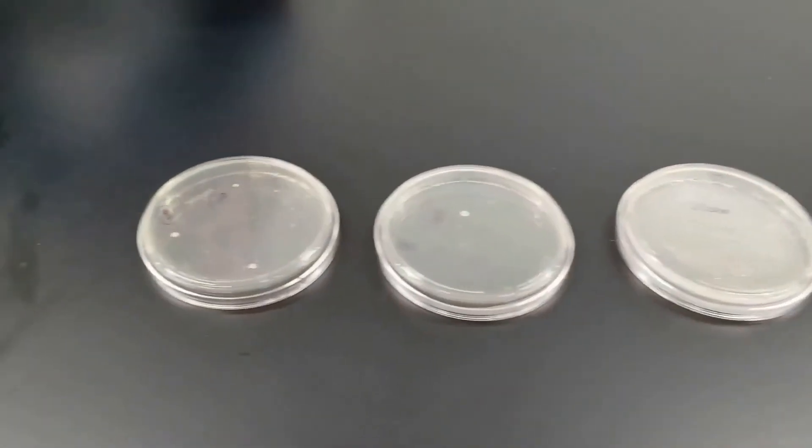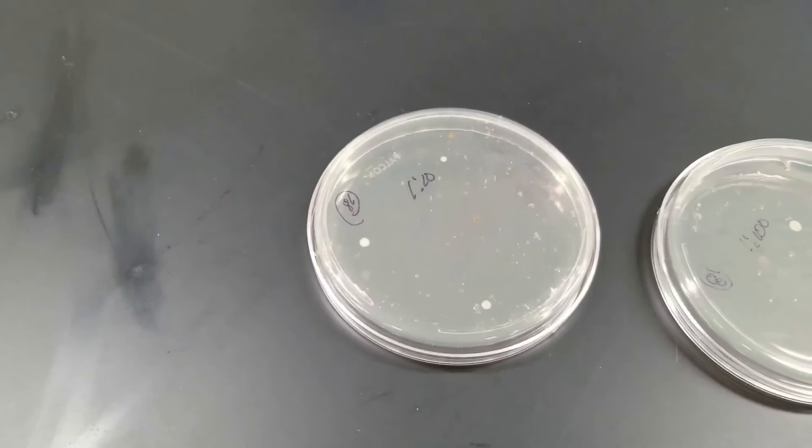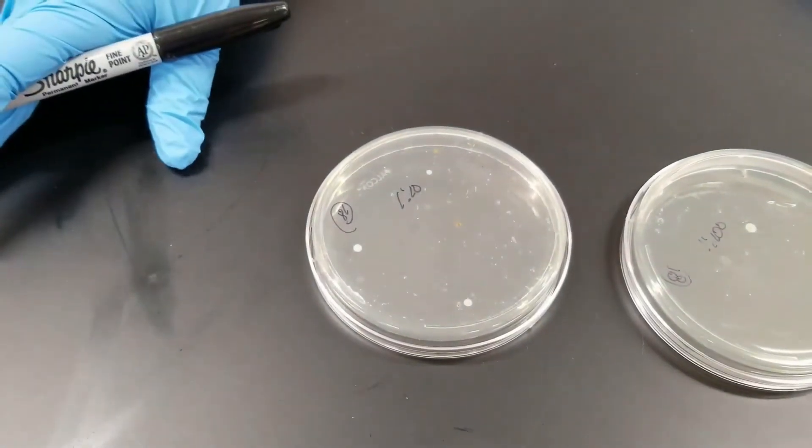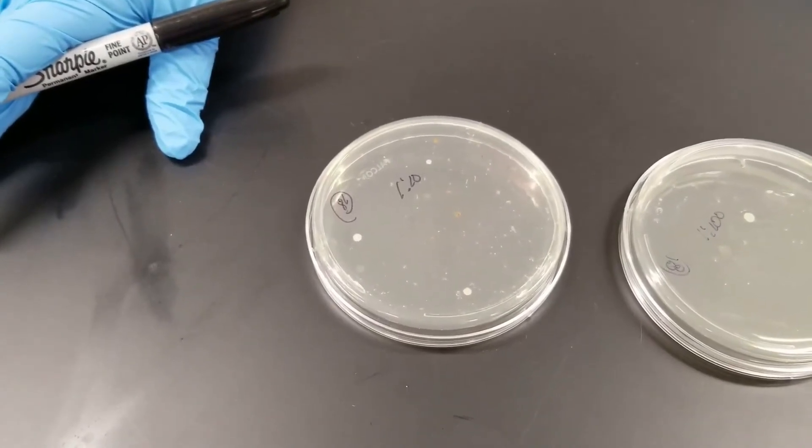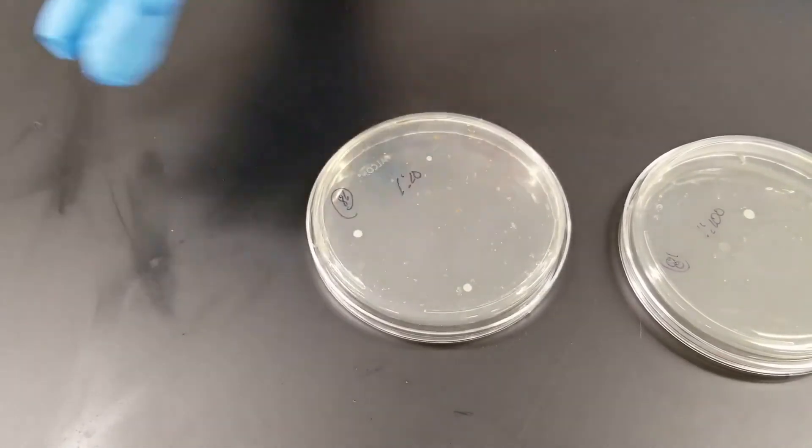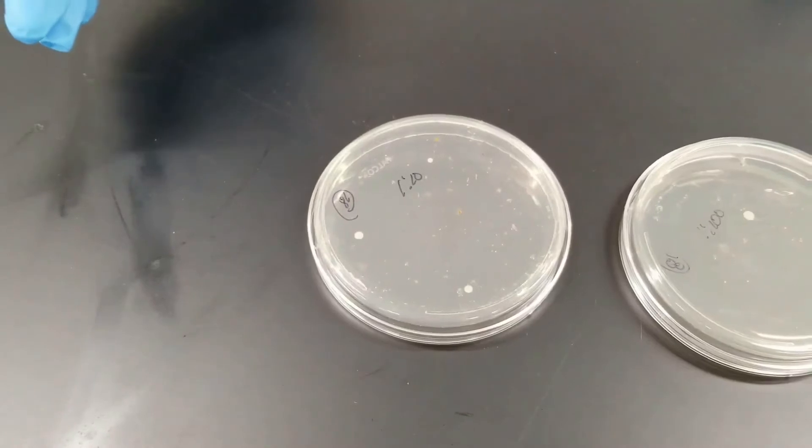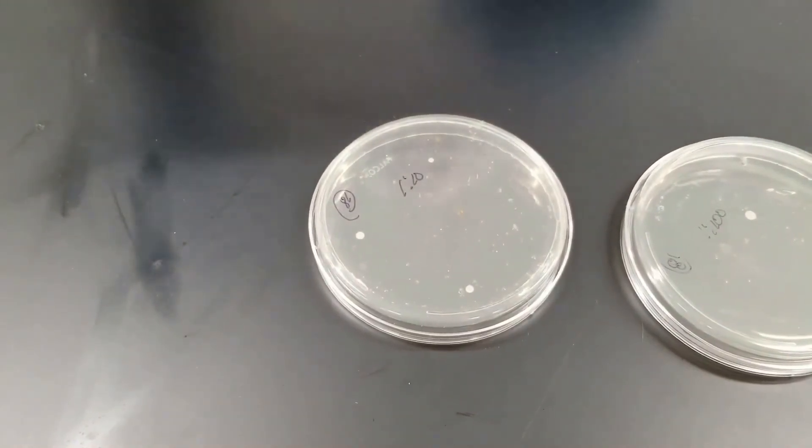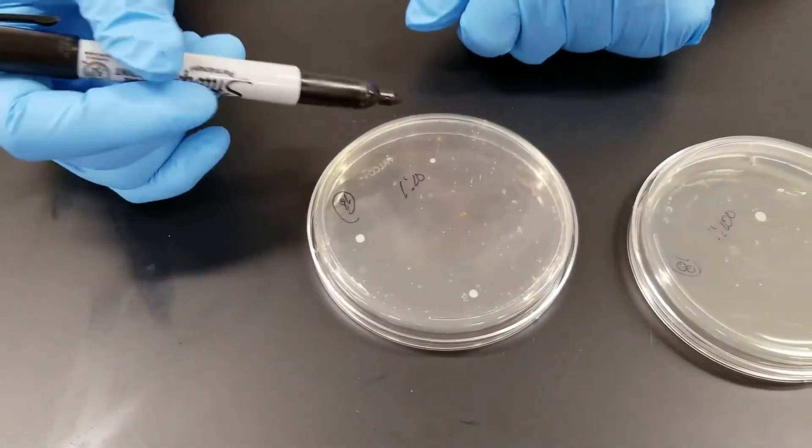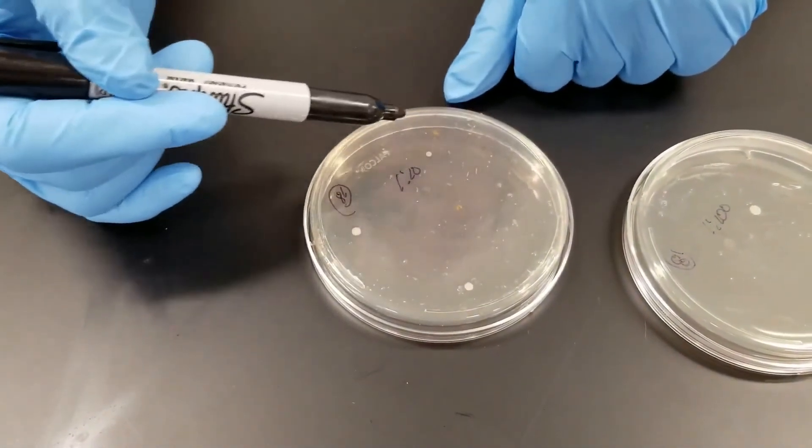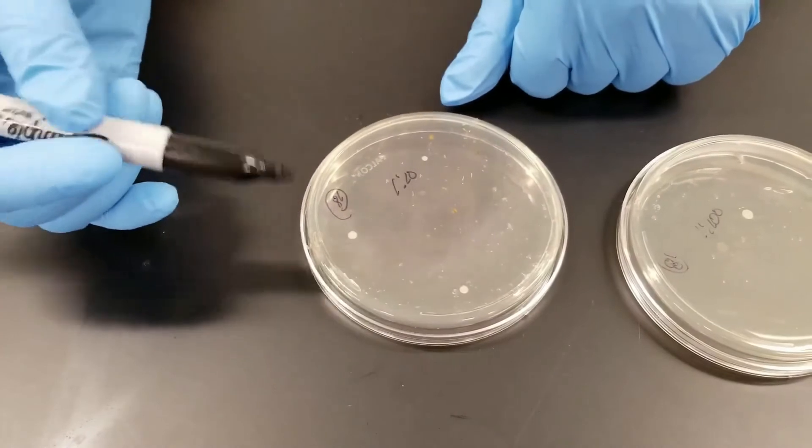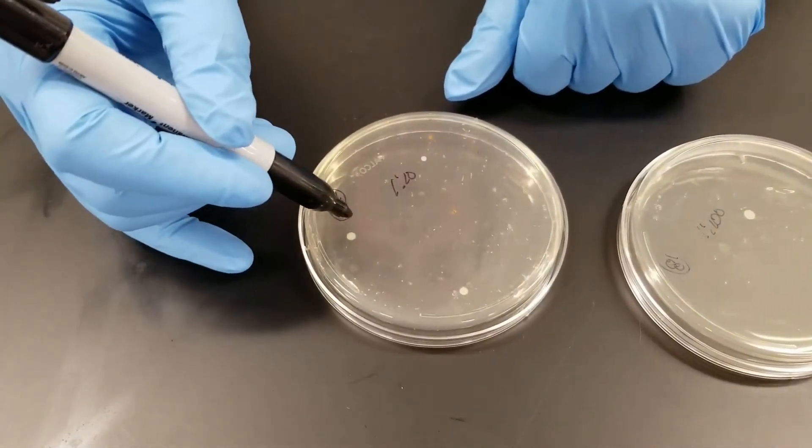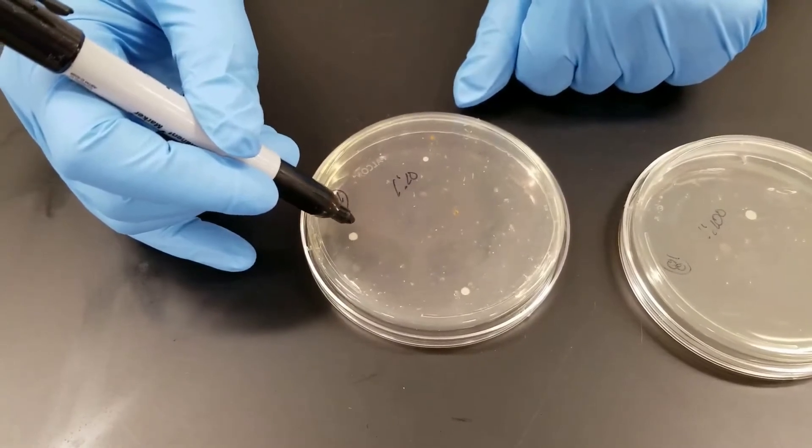So what you would do is go through and you would look. Some plates, if you had plated the strawberry directly on without diluting it, it would probably be overwhelmed with bacteria - it would be more than 300, which would be classified as too numerous to count. On this plate there are several different bacteria that are growing here. One easy way to keep track is if you take a Sharpie.